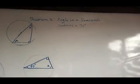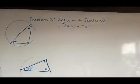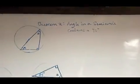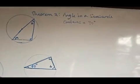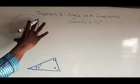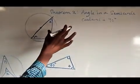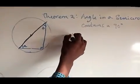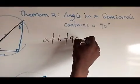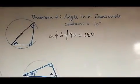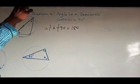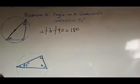Now the second theorem: the angle in a semicircle contains 90 degrees. A semicircle is when you divide the circle into two — the line that passes through the center divides it into two. So if we have this semicircle, this line divides it into two. The theorem says it contains 90 degrees, meaning A plus B plus 90 degrees must equal 180 degrees, because the sum of angles in a triangle is 180.